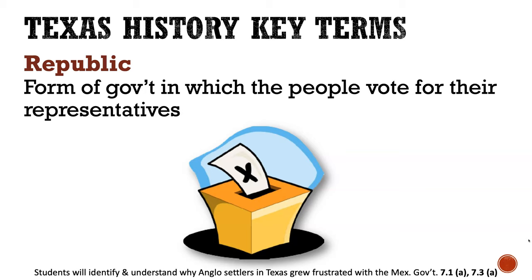The United States is a republic because we vote for people who then represent us in the government, whether it be in Washington, in Austin, or even here in Arlington for our local government officials like mayor, city council, and school board.